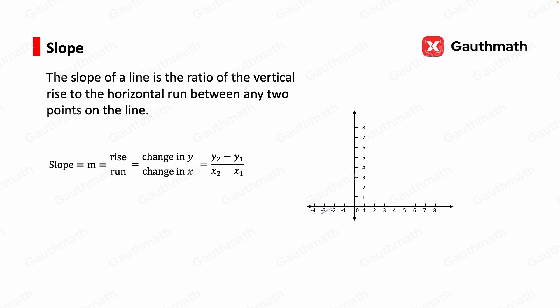So in the coordinate plane, we have a line, and then we have two points, x1, y1, x2, y2. So x2 minus x1 is the horizontal run, and y2 minus y1, that's the vertical rise, and the slope is vertical rise over horizontal run.